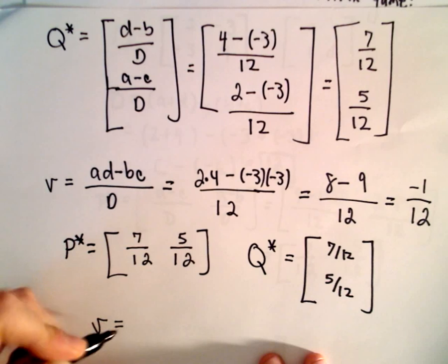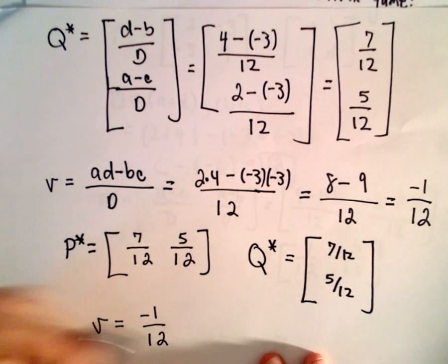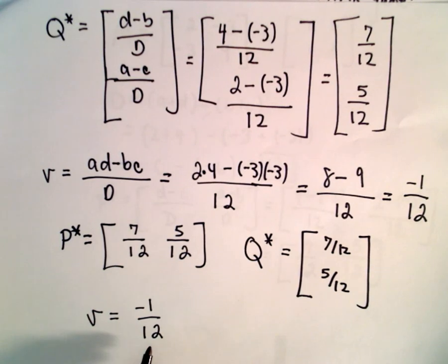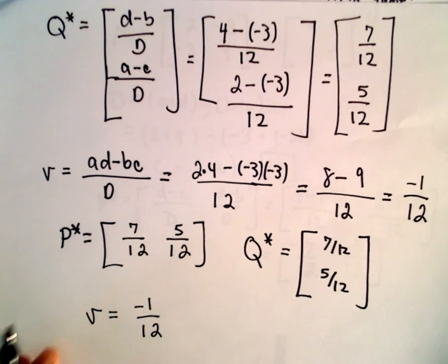Lastly, the value that we computed is negative 1 over 12. What that says is, it says that in the long run, it says that R's average loss will be 1 twelfth of a dollar per game. So R can expect to lose 1 twelfth of a dollar per game, while the column player's average gain, the column player will actually win 1 twelfth of a dollar on average.